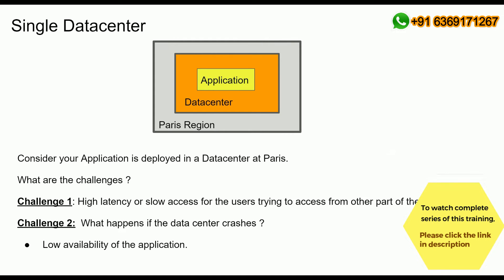Challenge number two: as the application is deployed in one data center at the Paris region, consider what happens if that data center crashes or goes down for any reason. Obviously, our application will be unavailable — it will go down and will not be available to end users.